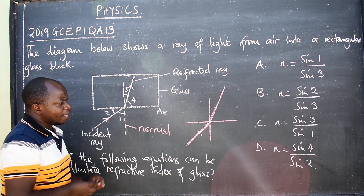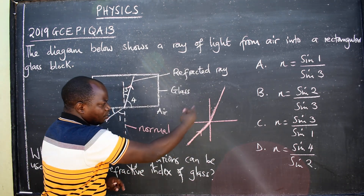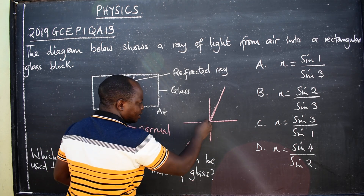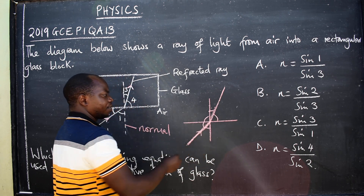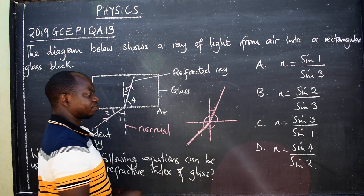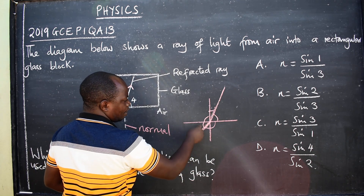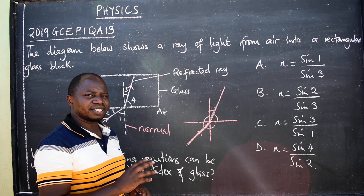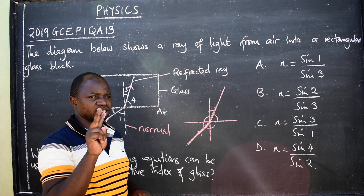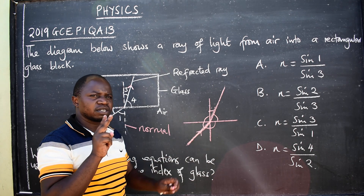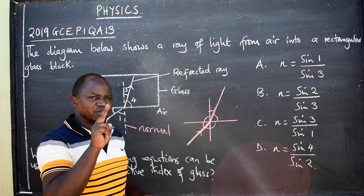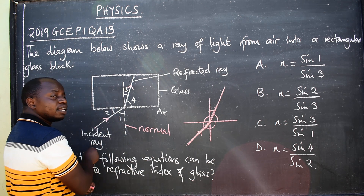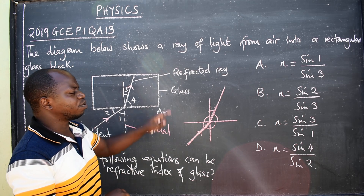There are a lot of angles that have been created here — there's this angle, this angle, this angle, this angle, this angle, and this angle. A lot of them: one, two, three, four, five, six. Out of the six, we are just interested in two angles. What are those two angles? The angle of incidence and the angle of refraction. Those are the two angles we are interested in.